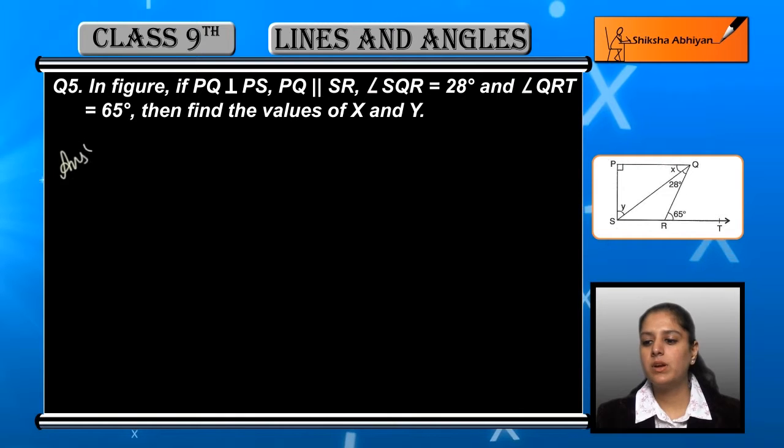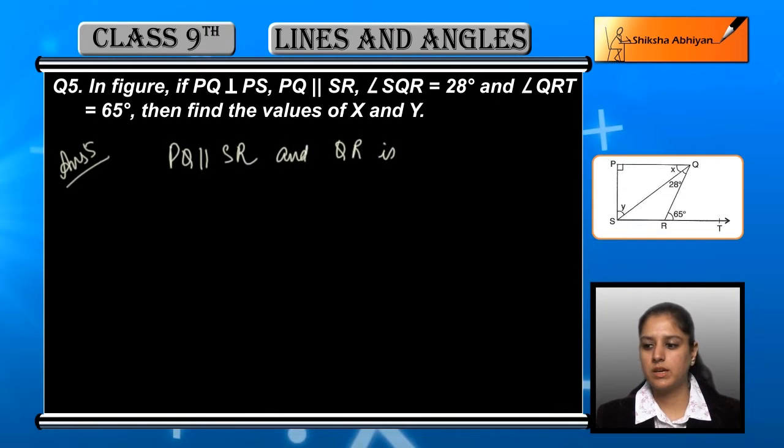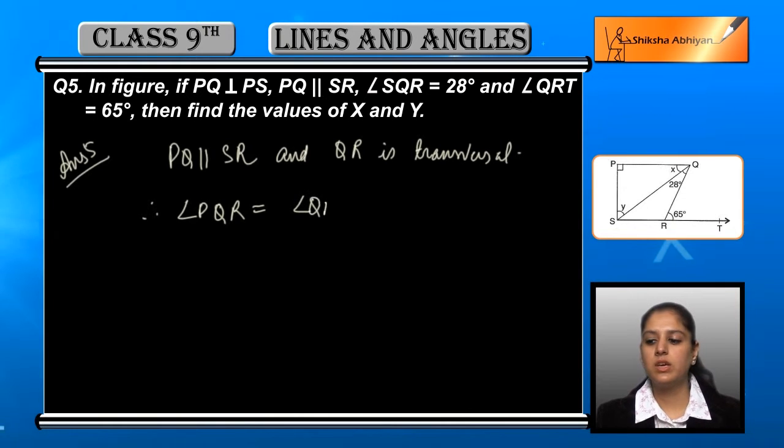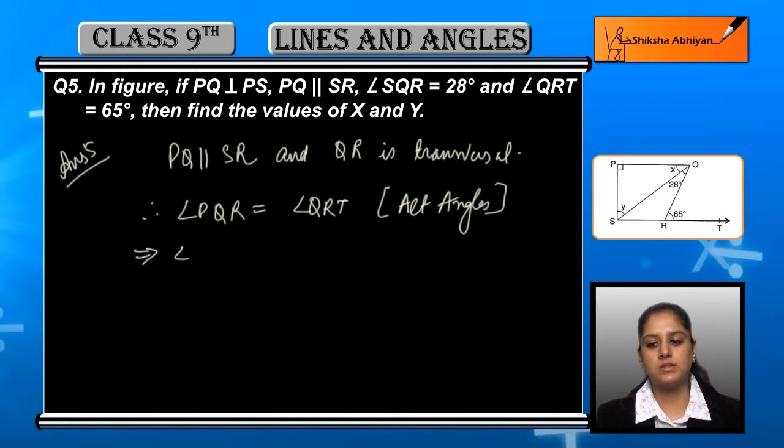First of all, PQ and SR are parallel to us, and QR is acting as a transversal in this case. So if PQ is parallel to SR, QR is the transversal, we can say that angle PQR is equal to angle QRT, because these are alternate interior angles pair, because of the two parallel lines PQ and SR.